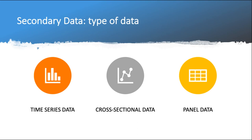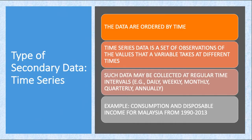Secondary data can be analyzed as time series, cross-sectional, or panel data. Time series data is ordered by time — one company, individual, or country observed over many years. Data may be collected at regular intervals: daily, weekly, monthly, quarterly, or annually. An example is consumption and disposable income for Malaysia from 1992 to 2015.